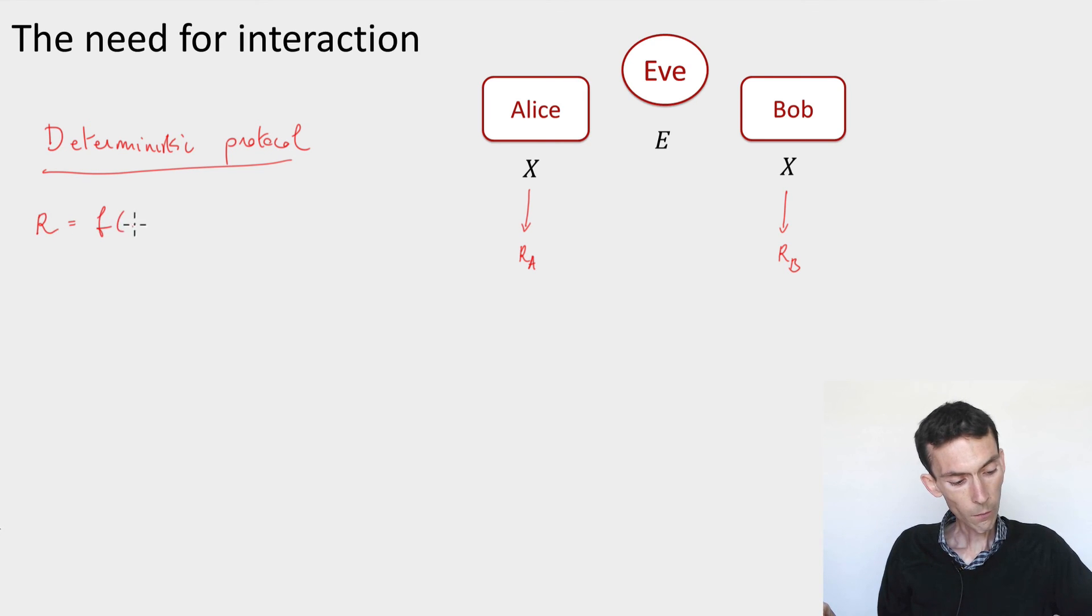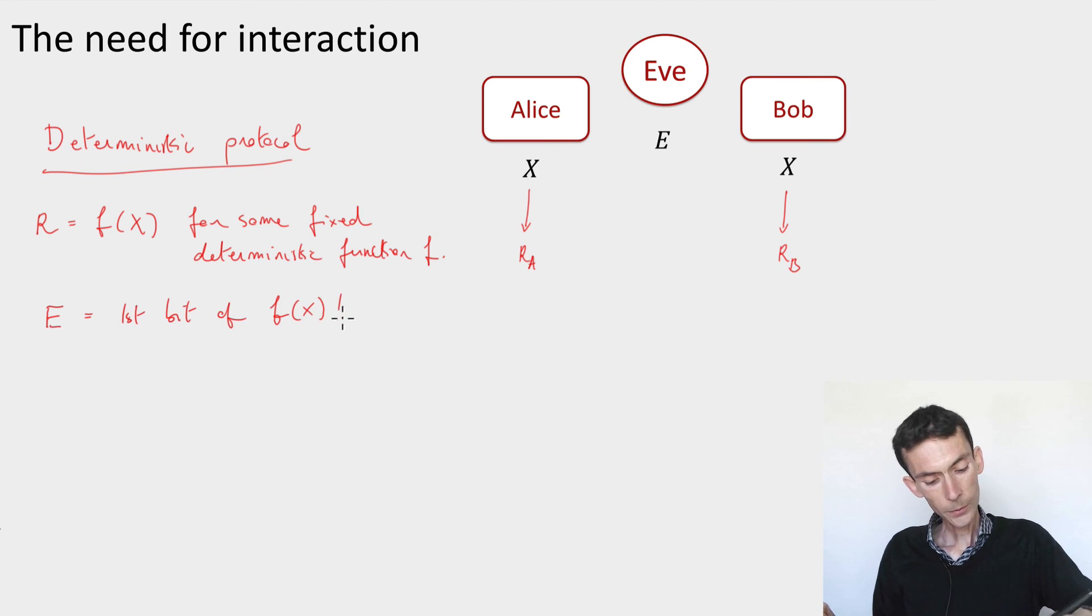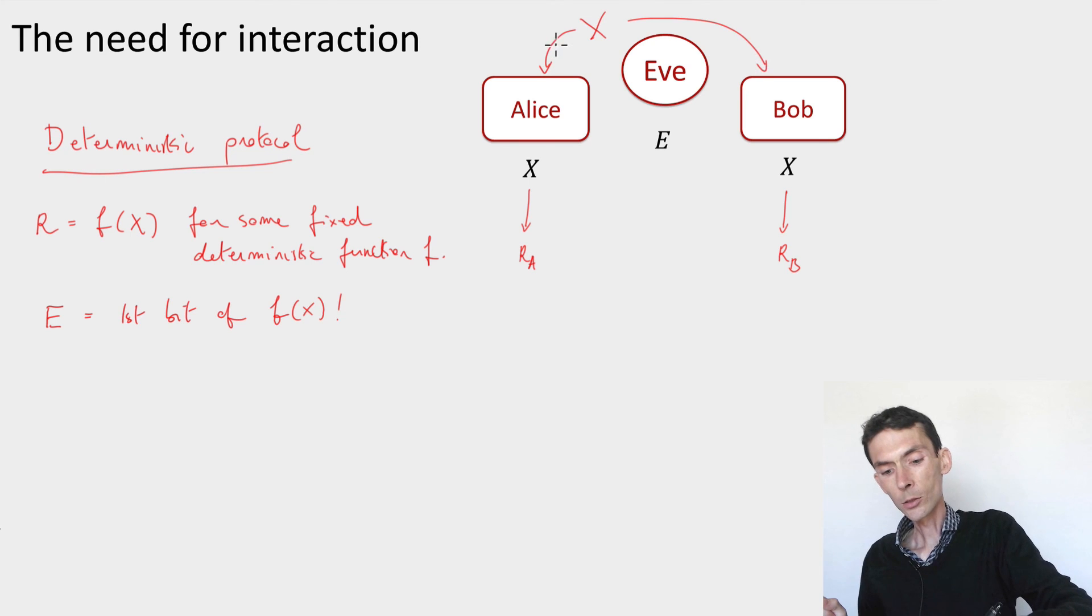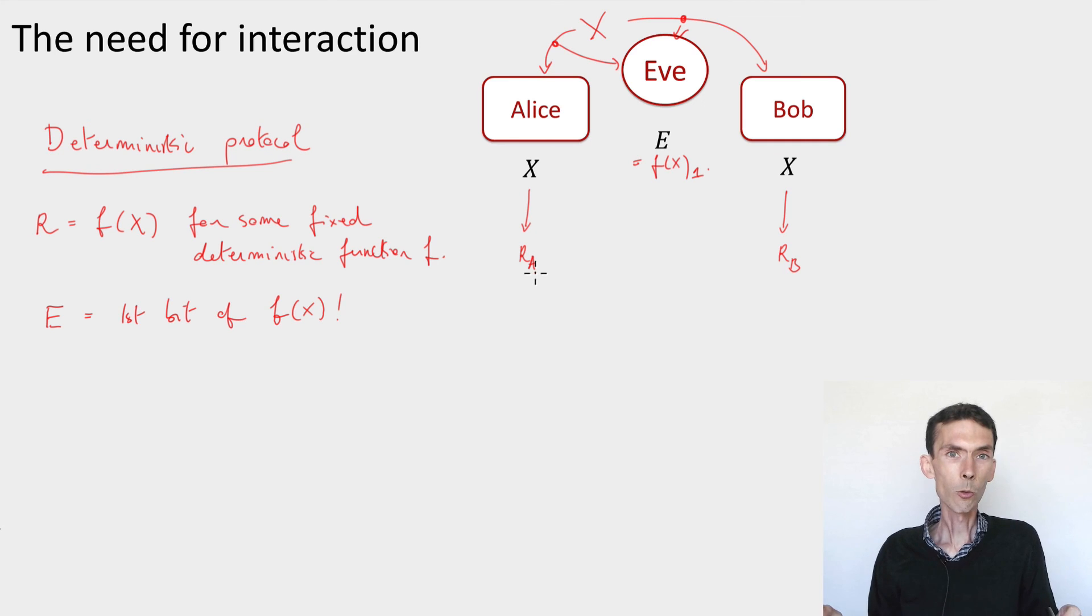So let's imagine that r is computed as a function of x for some fixed deterministic function f. Then I claim that the eavesdropper can always break this. What's the idea? Well, we could just simply take as side information for the eavesdropper the first bit of f(x). So that's just one bit of side information, something that the eavesdropper could keep. I'm assuming that f is a public function. Everyone knows what the protocol is. And if the function that's applied is always the same, then the eavesdropper also knows what function is going to be applied. So when x is distributed over to Alice and Bob, and the eavesdropper can listen in on this channel and keep a little bit of side information, it could just store this first bit of f(x). And that's just one bit, but it's the first bit of r, which means that it's enough to distinguish r from uniform. So we don't get a security guarantee.